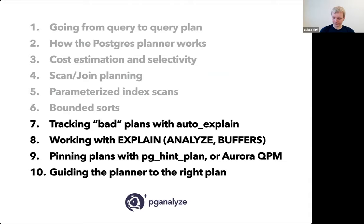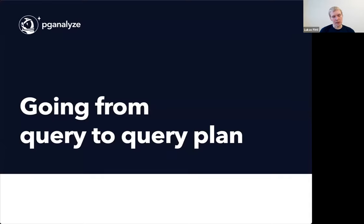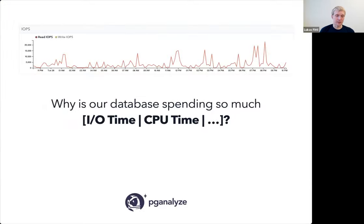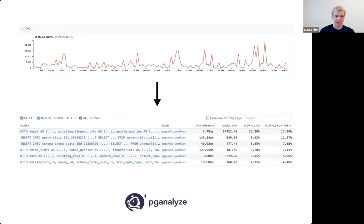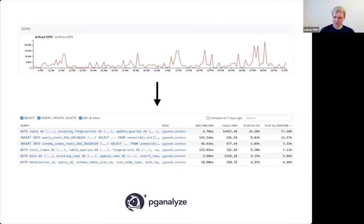Let's dive in. When we go from a query to a query plan, the main motivation is either the query is slow, or the whole database is spending too much I/O time or CPU time. What I would typically do is go from I/O, for example, into the individual queries that are running, and sort them by percentage of I/O or percentage of all run time. This is a screenshot of pganalyze but the concept is universal — you want to go from the high-level metric down to the individual aspects of the system.